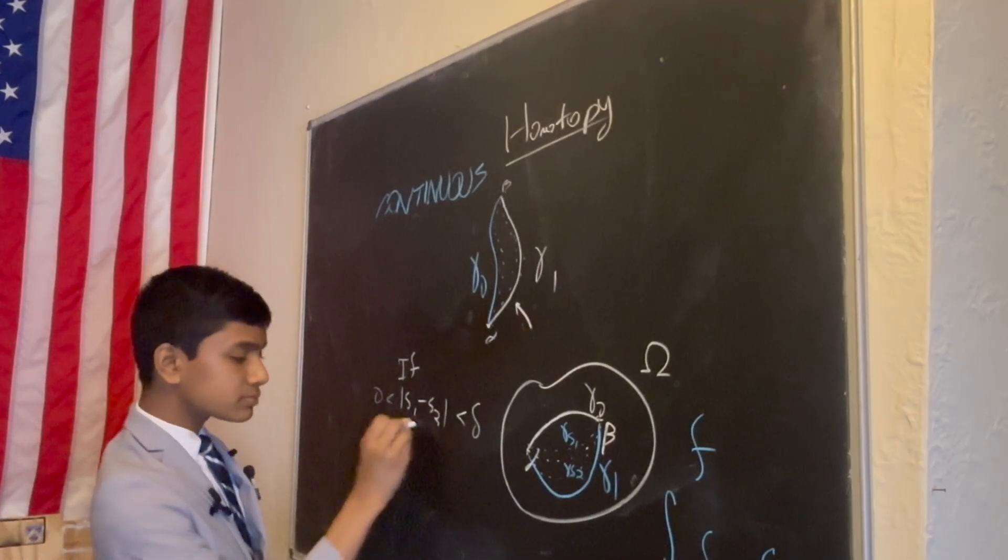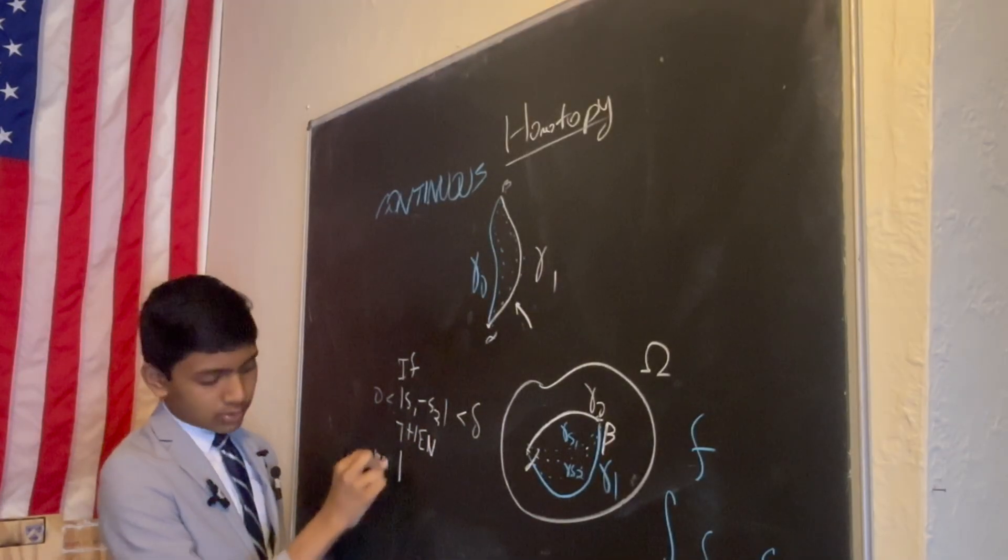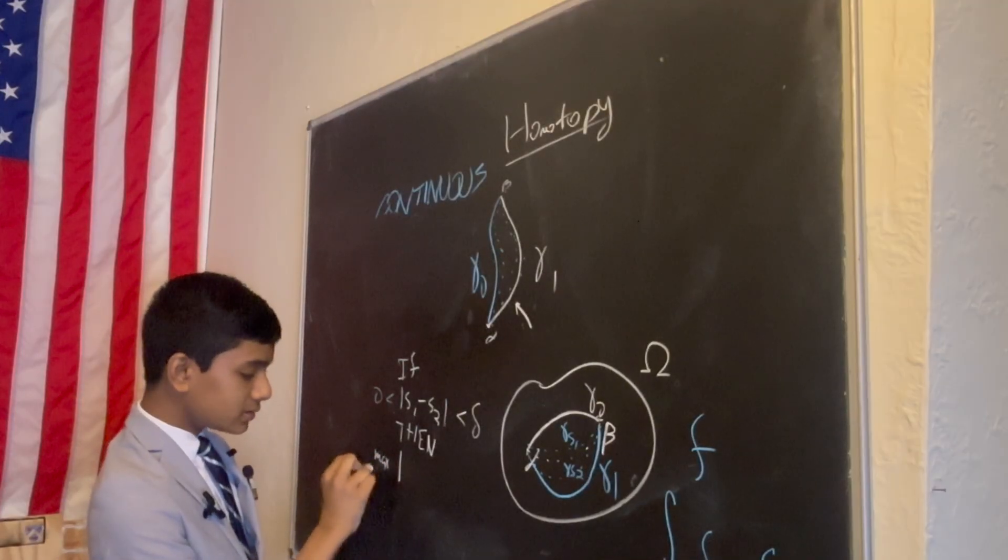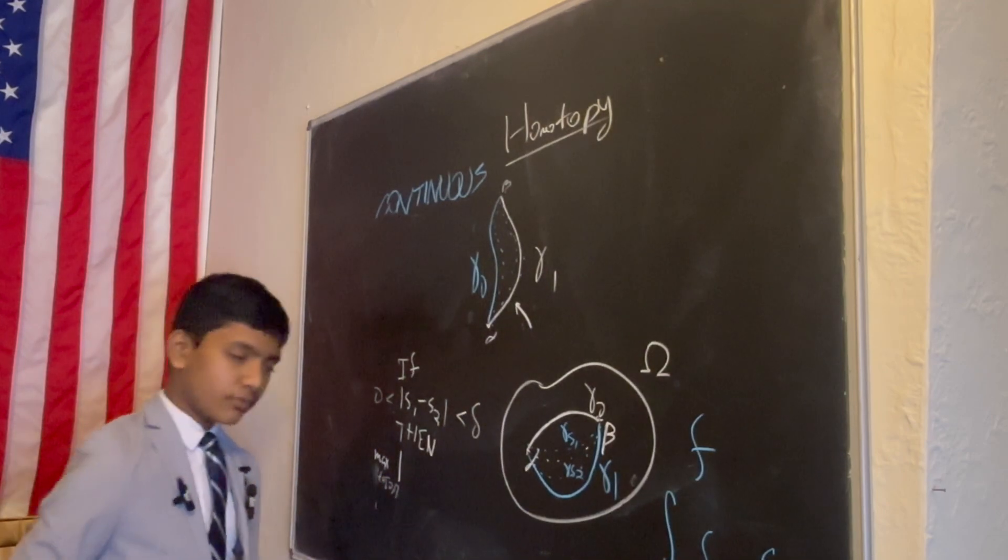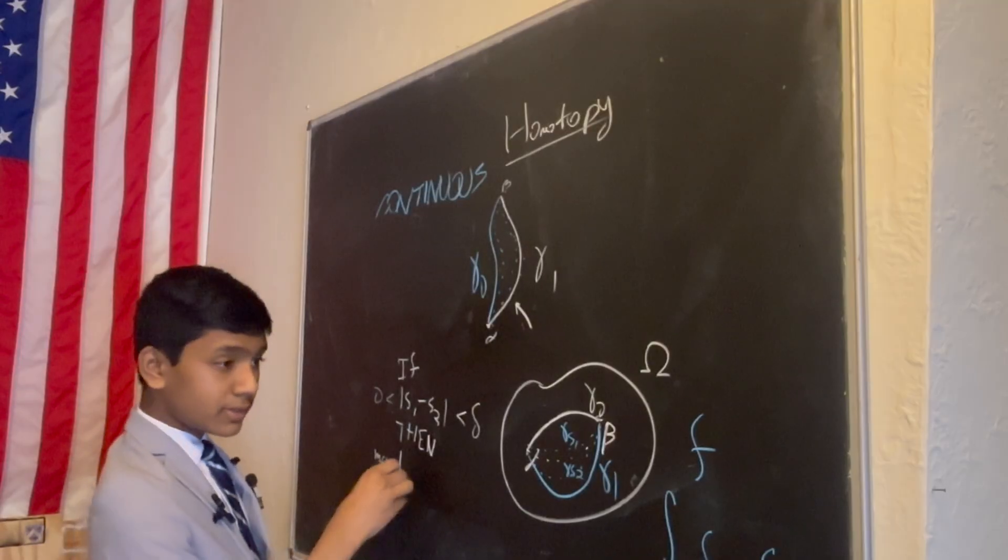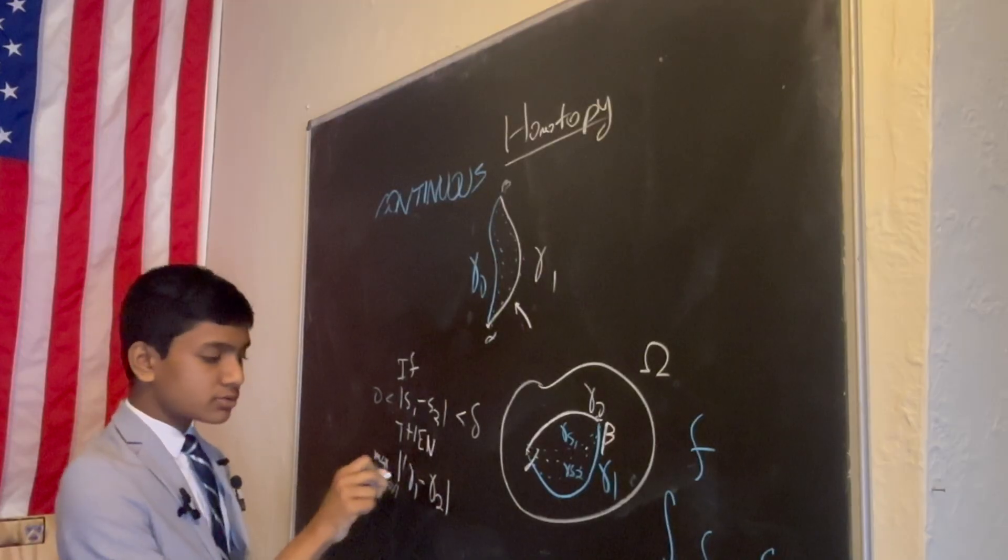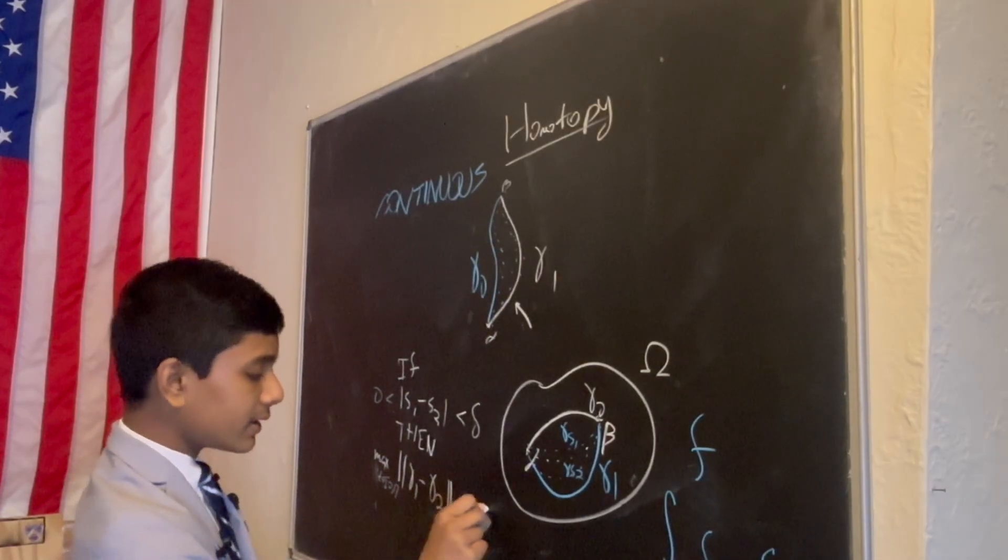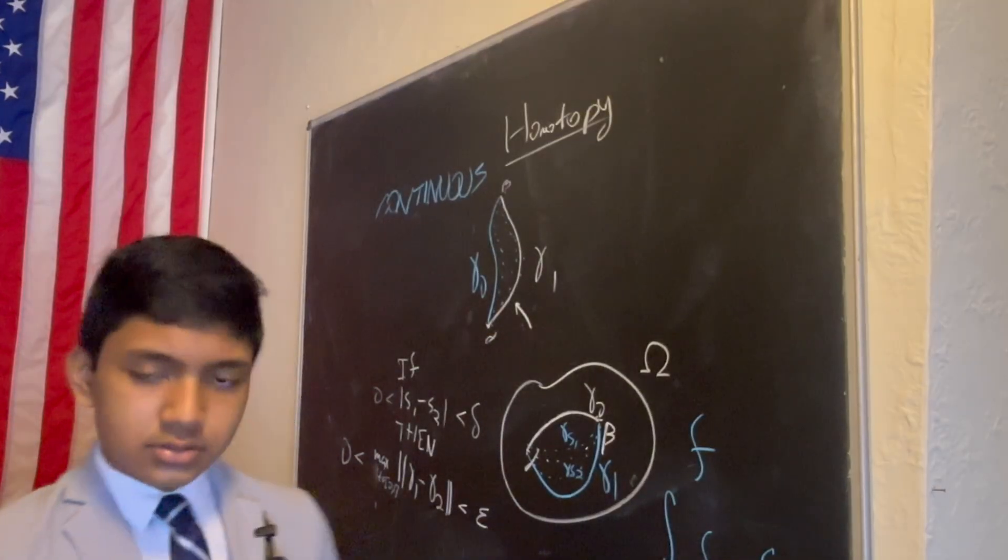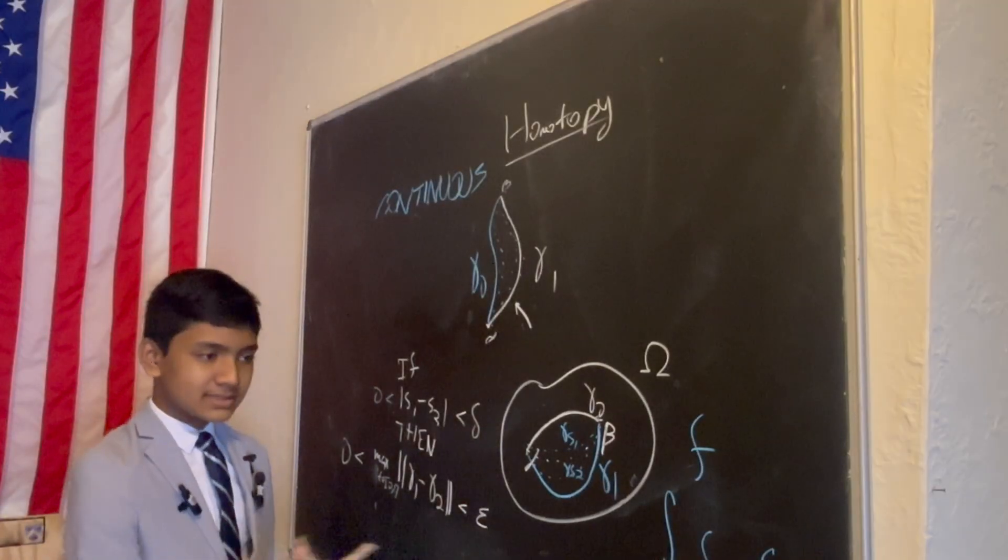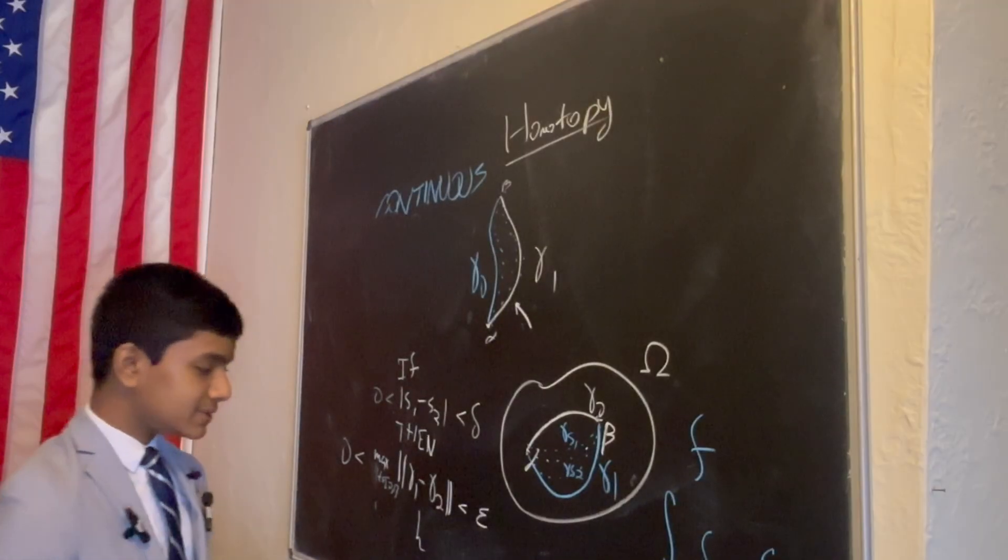then the maximum, or supremum, over all t between 0 and 1 of the distance between gamma 1 and gamma 2 is less than epsilon, or some epsilon. So, this is essentially what continuity means, and it's what we can assume now that we know h is continuous.